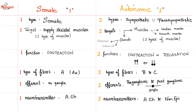Somatic has one target: skeletal muscles only. Autonomic has two targets: muscles and glands. Muscles have two subtypes — cardiac and smooth. Glands have two subtypes — endocrine and exocrine. Somatic has one function: to contract the muscle. Autonomic has two functions: I can increase or decrease your heart rate, increase or decrease gastric acid secretion, increase or decrease bowel motility. Somatic has one type of fiber — A fiber, usually A-alpha. Autonomic has two: B and C. Somatic has no time to relay in a ganglion; autonomic can wait, with preganglionic, a ganglion, and then postganglionic.